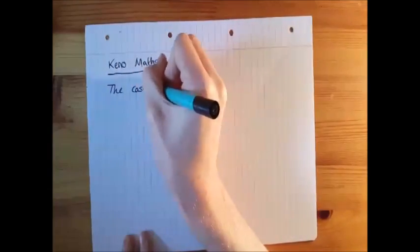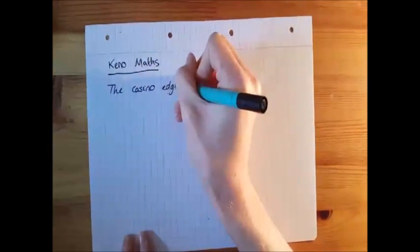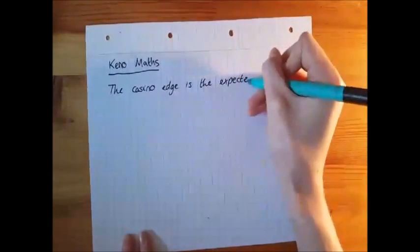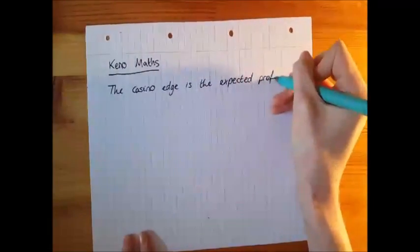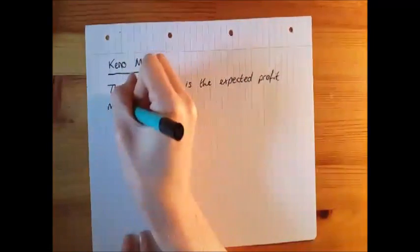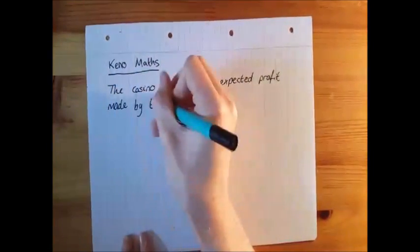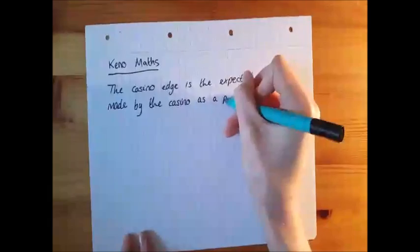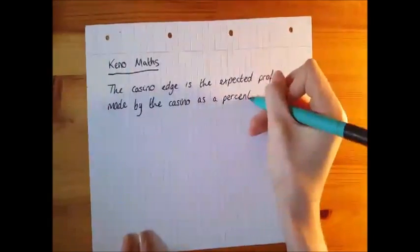In this video, I will be explaining the maths behind Keno and also the casino edge, which is the percentage amount the casino is expected to make from the player's original bet.